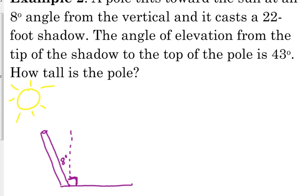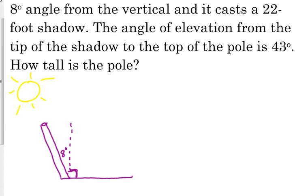It casts a 22-foot shadow, so here's our 22-foot shadow. It extends to this point. The angle of elevation from the tip of the shadow to the top of the pole, so we've got a line going here from the tip of the shadow to the top of the pole. That angle of elevation is 43 degrees. How tall is the pole? So this is what we're asking for, H right here.